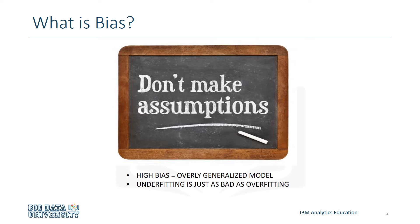High bias tends to create overly generalized models, which can cause a loss of relevant relations between the features and target output. When a model has high bias, we say that it underfits the data.